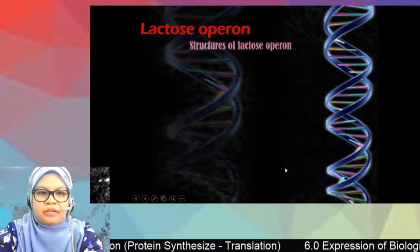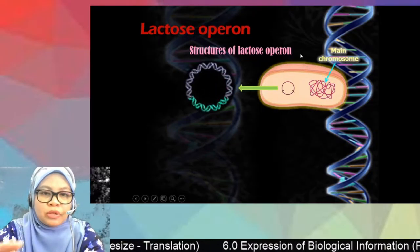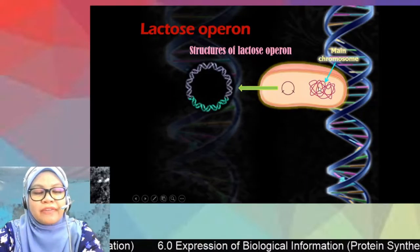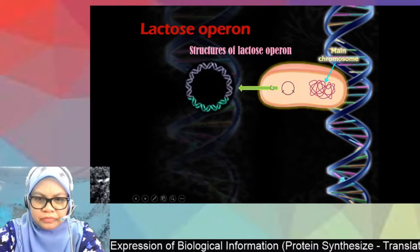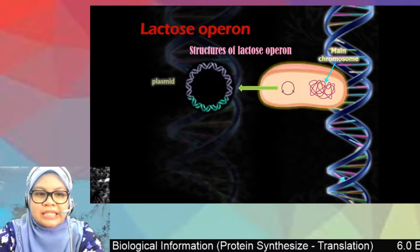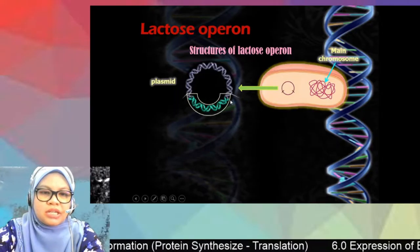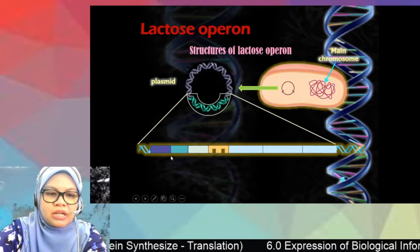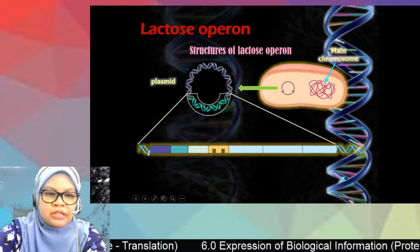E. coli is a prokaryote, so its DNA resides freely in the cytoplasm. The E. coli DNA is in a circular shape, which we call a plasmid. Here is the double-stranded E. coli DNA laid out, showing the lac operon system.